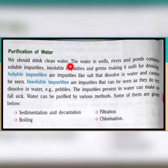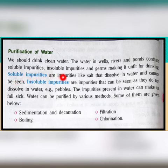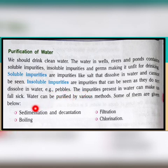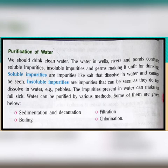Before drinking, water should be purified properly. Soluble impurities are those which dissolve in water, and insoluble impurities are those that can be seen as they do not dissolve in water. The impurities present in water can be purified by various methods like sedimentation, decantation, filtration, boiling, and chlorination.